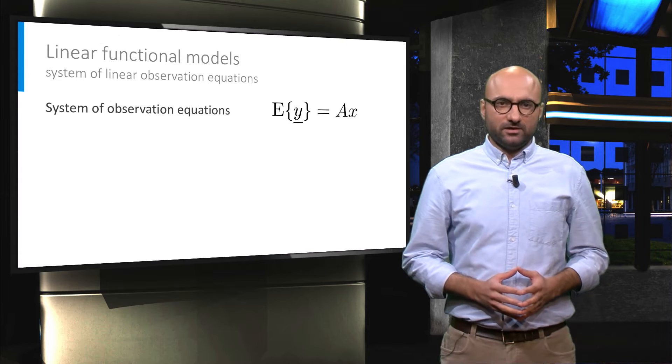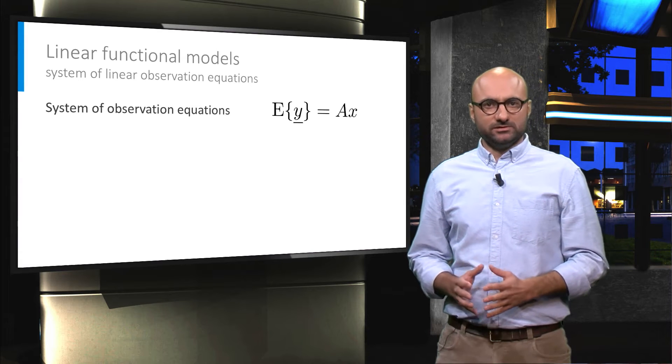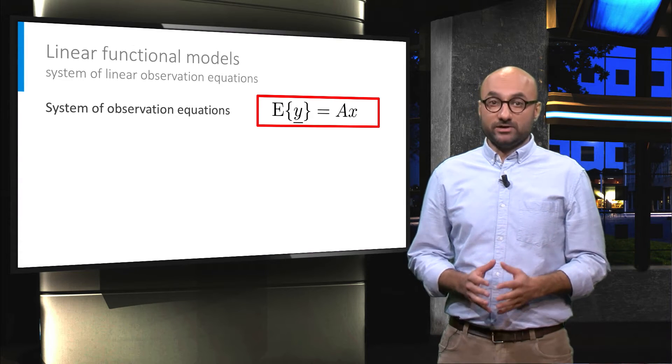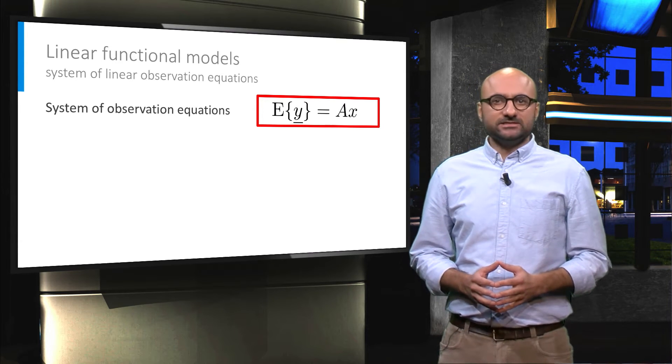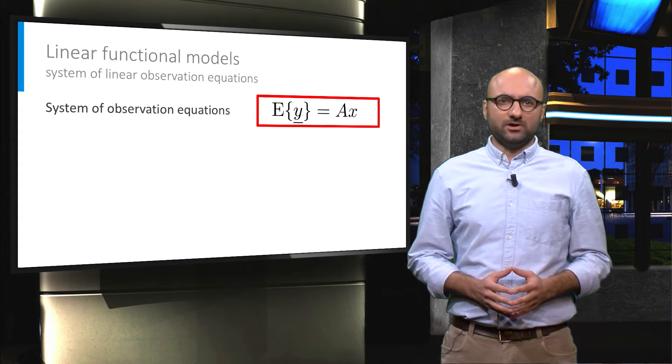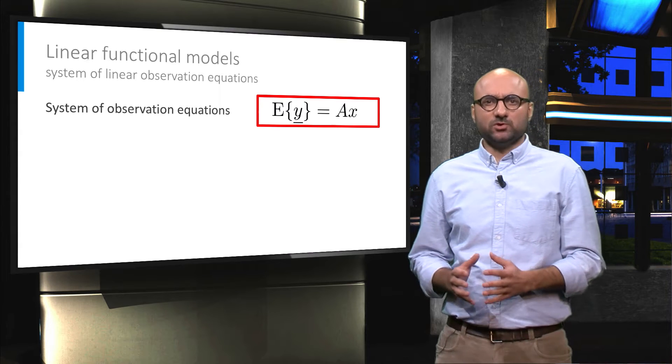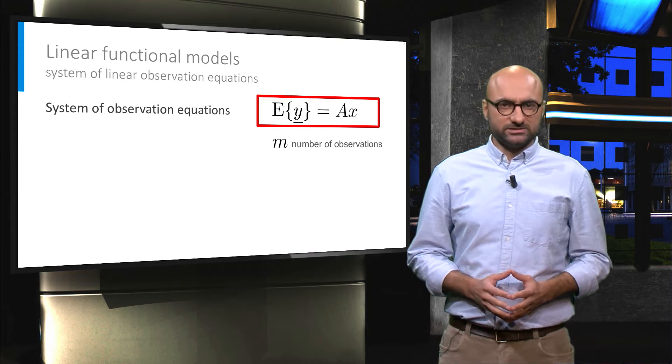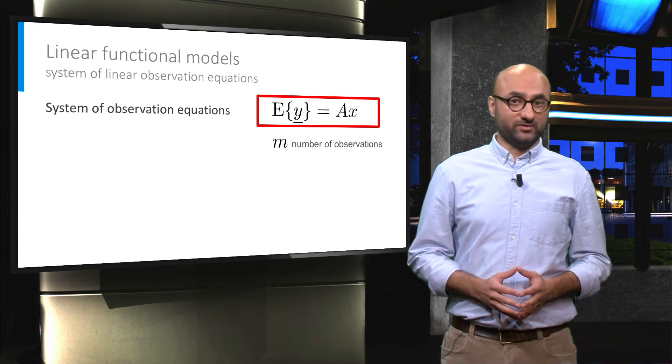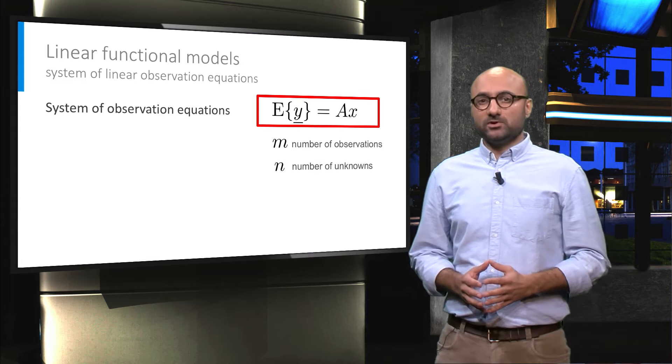We have learned so far about the linear functional model in the form of y or expectation of y equals Ax. With this kind of models, the estimation problem can be seen as how to solve a system of observation equations with m equations corresponding to m observations and n number of unknowns.